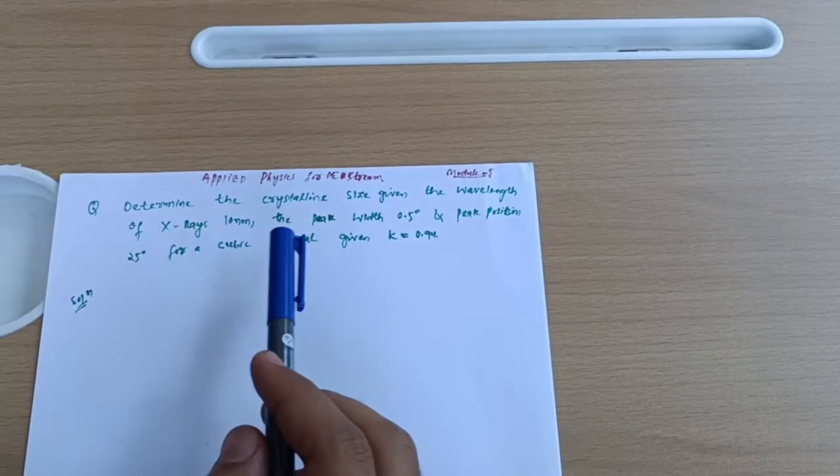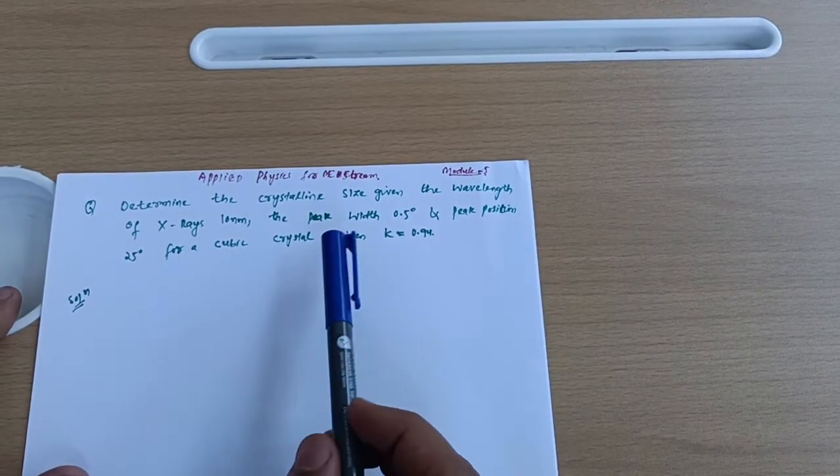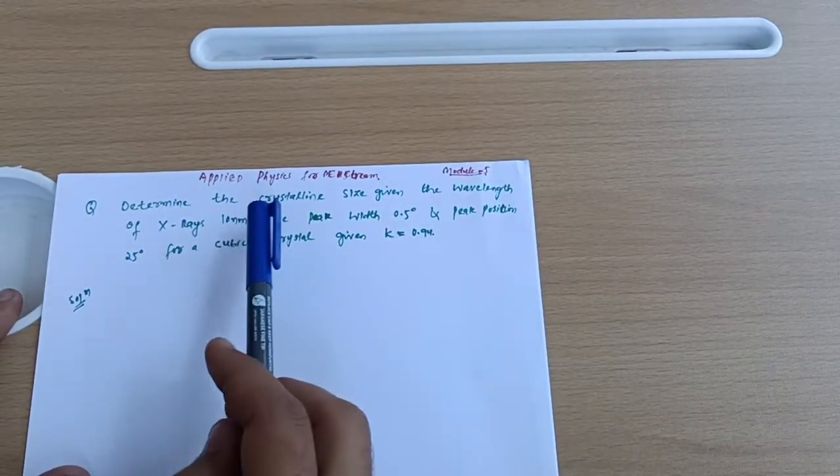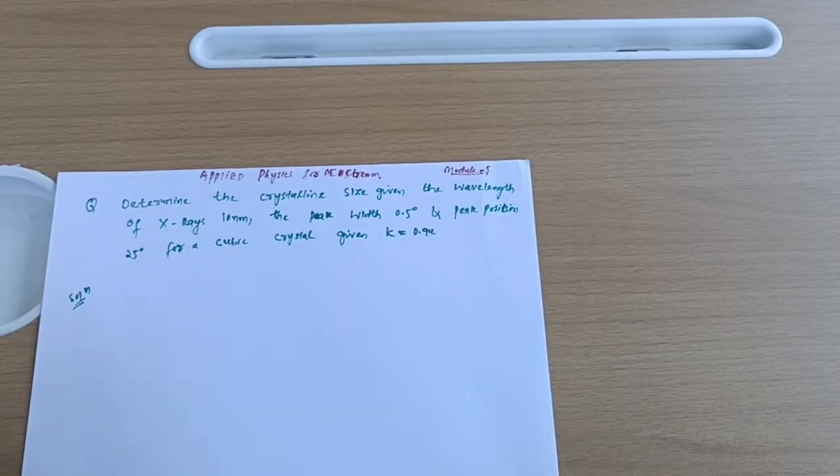As I've already included crystal size determination in your passing package, if you've watched that video, you've gone through the determination of crystal size. On that basis, we have a numerical which is very simple - these six marks are just in our pocket, or sometimes five marks.